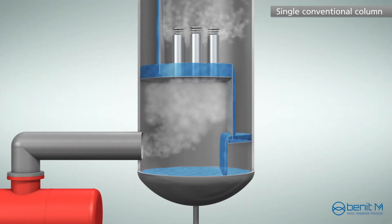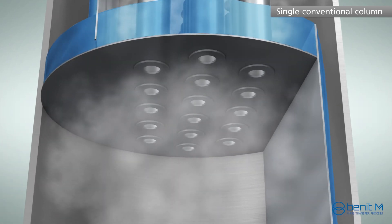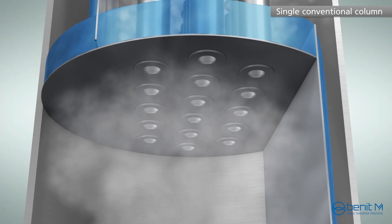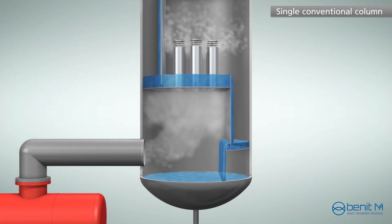Uniform vapor distribution is very important, especially in packed columns. It is recommended to design the chimney tray to have a proper pressure drop for even vapor distribution. In a chimney tray with a fixed open area, the developed vapor distribution might be acceptable at the designed vapor rate.